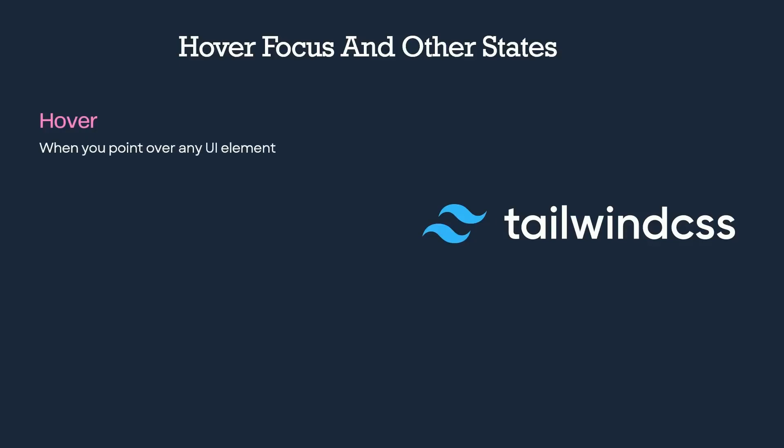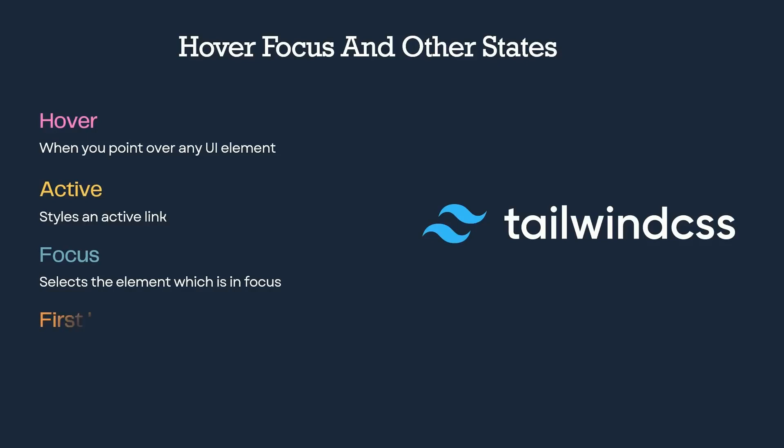When you point over any UI element, it is known as the hover state. The hover state gets active and applies the styles you provide. Same with active as well — if you have a navigation bar and want to style the currently active link, like if you are on the about page, you can provide some styles to active. We also have focus — if a UI element is currently in focus, you can apply some styles to it. Same with first and last: if you want to apply styles to the first or last child of any parent, you can use the first and last properties.